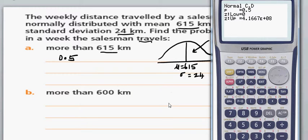When you don't know the upper bound, put a large number, and when you don't know the lower bound, put a small number.